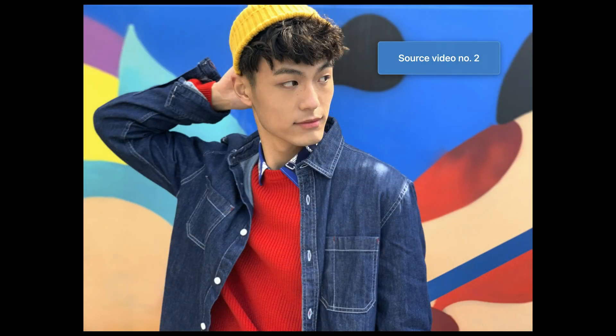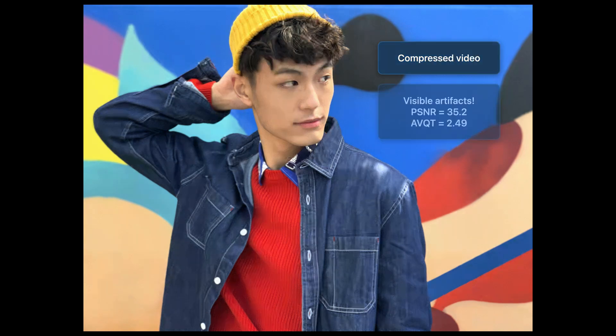We go over the same exercise for our second source video. The compressed video in this case seems to have visible artifacts — in particular, you can see some artifacts on the face of the person. Interestingly, it gets the same PSNR score of around 35, but this time AVQT rates it around 2.5, implying poor quality. We think the AVQT score is the correct prediction here. This is just one example to illustrate what can go wrong in cross-content evaluations.